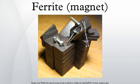Hard ferrites also have high magnetic permeability. These so-called ceramic magnets are cheap and are widely used in household products such as refrigerator magnets. The maximum magnetic field B is about 0.35 Tesla and the magnetic field strength H is about 30 to 160 kA·m⁻¹. The density of ferrite magnets is about 5 g/cm³.